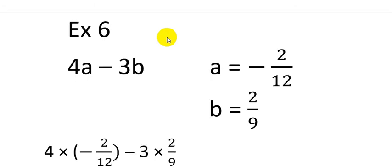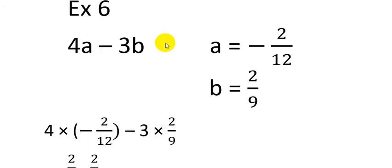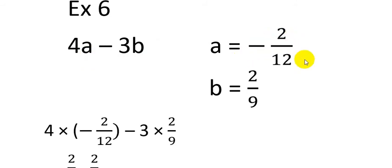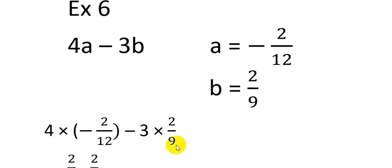The last example is an algebraic expression with two terms: 4a minus 3b. The value of a is minus 2 over 12 and the value of b is 2 over 9. I am going to substitute these values — replacing a with minus 2 over 12 and replacing b with 2 over 9.